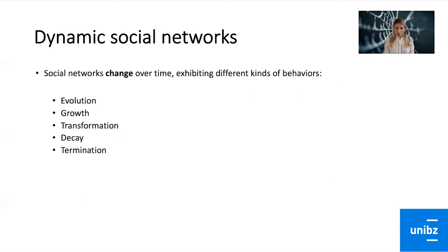So far we have looked at social networks from a static perspective, but networks can change over time and exhibit different kinds of dynamics. They might evolve, grow, become bigger or smaller, transform, or even decay. Decay means that if you have a connection with someone but don't stay in touch for a long time, the relationship becomes less active. To reconnect, you need to put in effort. Some ties may even terminate — for example if you break up with a partner.